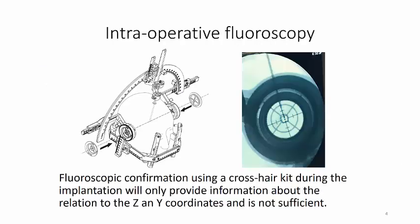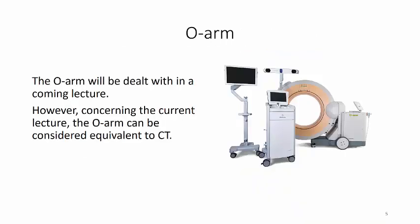There are different methods for visualization of the electrodes. Some use intraoperative fluoroscopy, but fluoroscopy confirmation using a crosshair kit during the implantation will only provide information about the relation to the x and y coordinates, and this is not sufficient. Concerning the O-arm, this will be dealt with in a coming lecture. However, concerning the current lecture, the O-arm can be considered equivalent to CT.